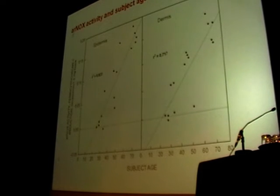For both epidermis and dermis of 16 females, ARNOX activity and subject age were positively correlated and reached a maximum amount between ages 55 and 65. The line extrapolates at zero to the age of 30.